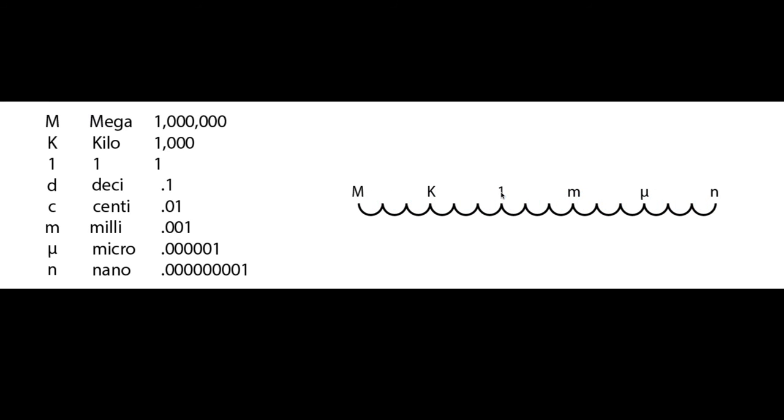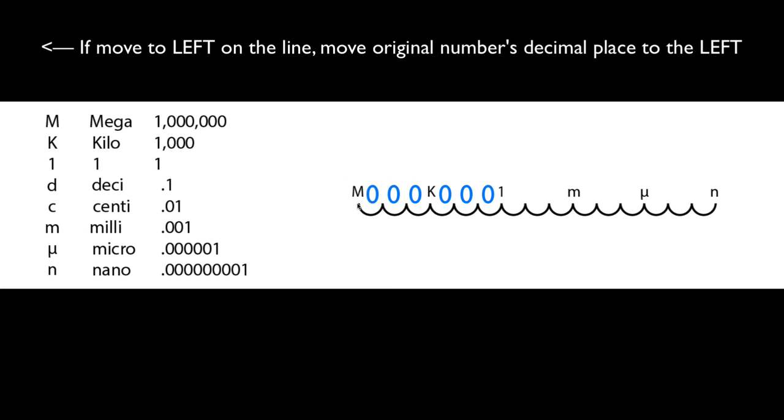So if we have the number one and we add three zeros to it, we wind up with a thousand or one kilogram. And if we add three to that, we wind up with one megagram. There's the one, there's the three zeros, and there's the six.